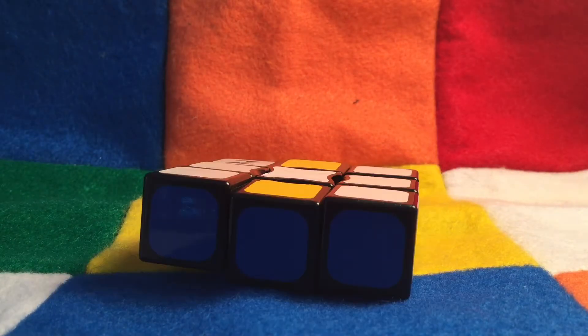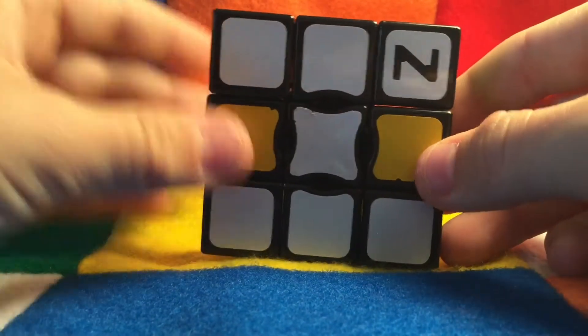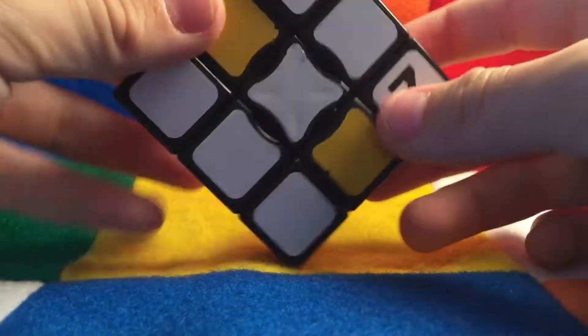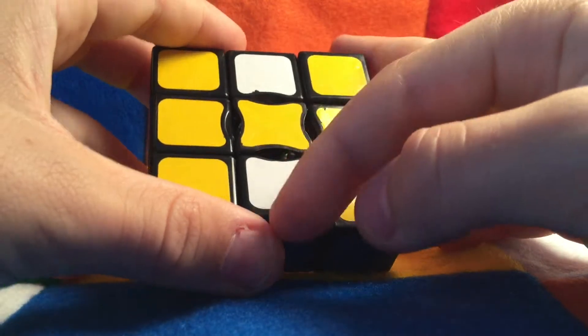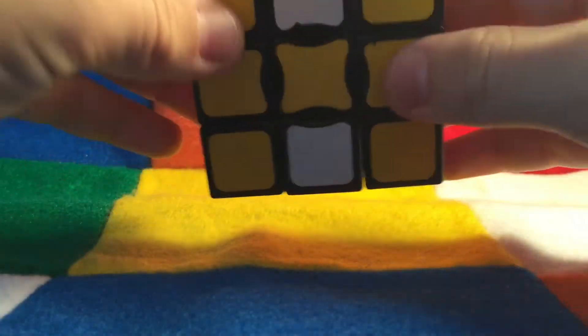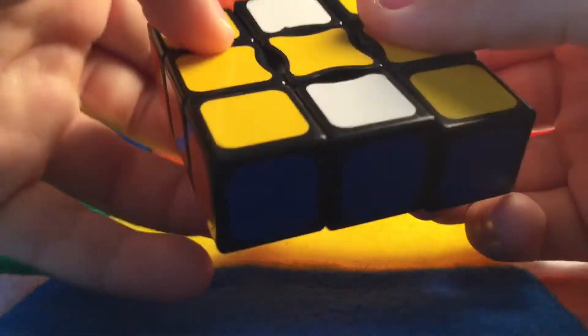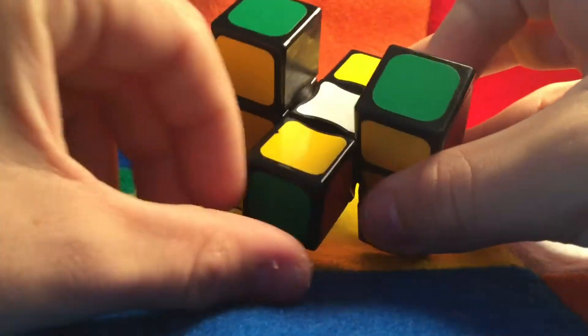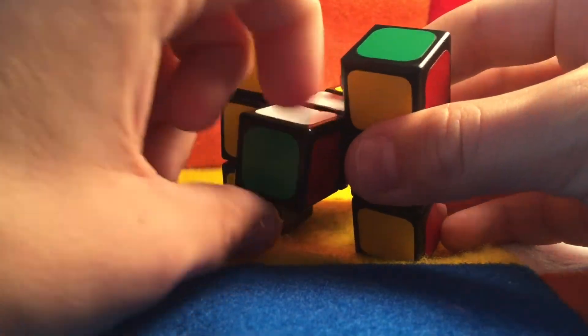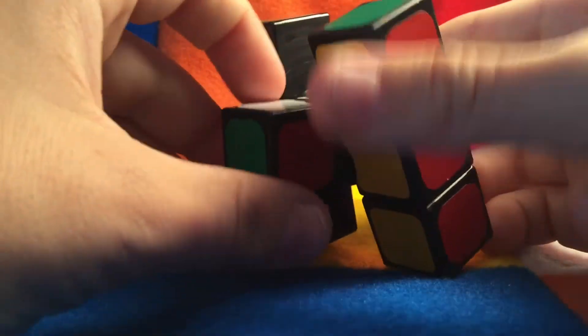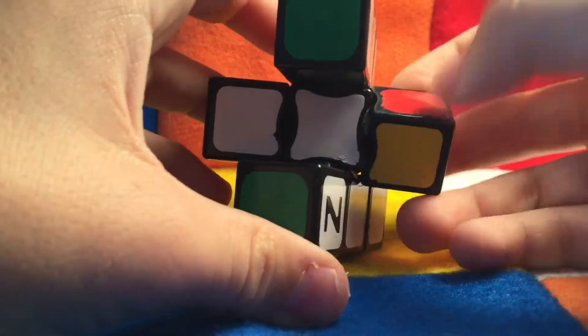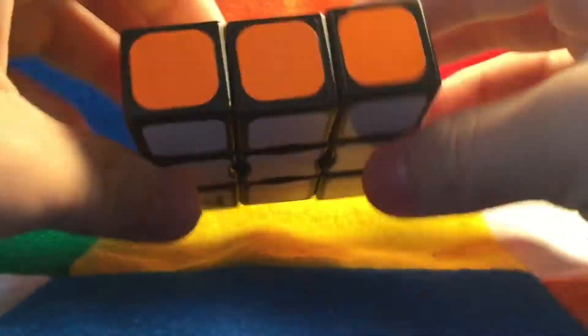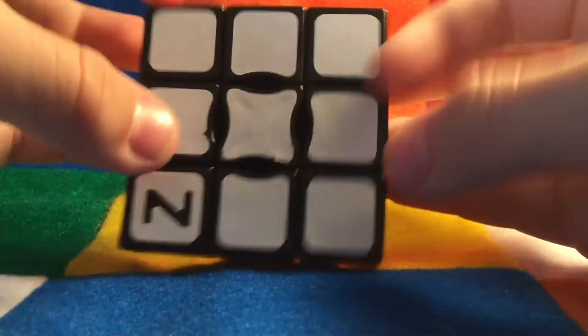Alright, so here is the next step. You are going to get many different cases, but this is one of them. This is one ending point. So all you got to do to solve this is you got to put it like this, like an H, and then you are going to turn this so it is facing the correct way. Turn this so it is facing the correct way. Just turn it back to normal, and your Z-Cube is solved.